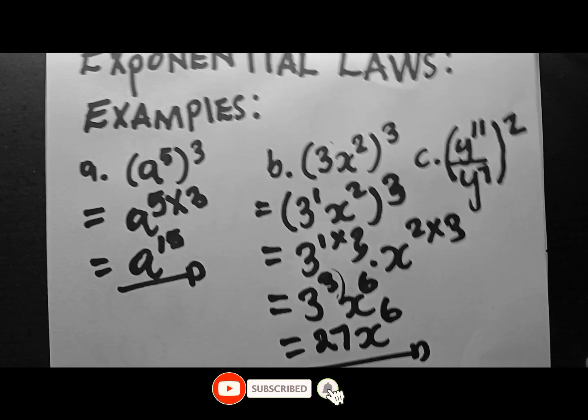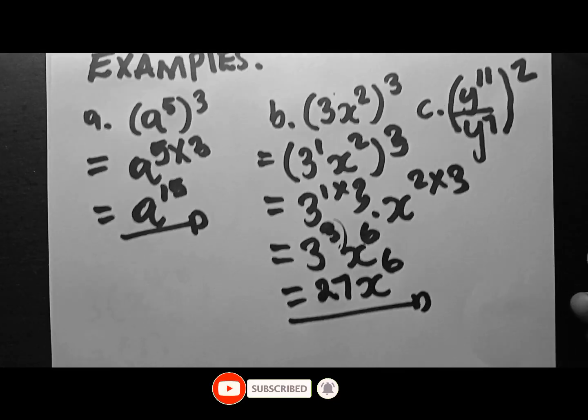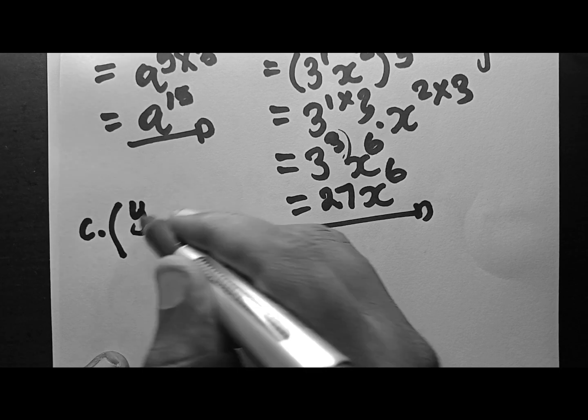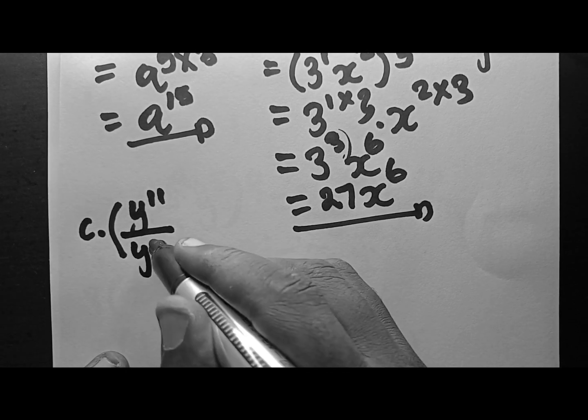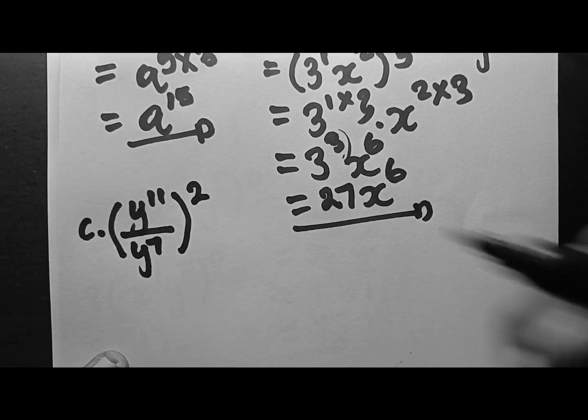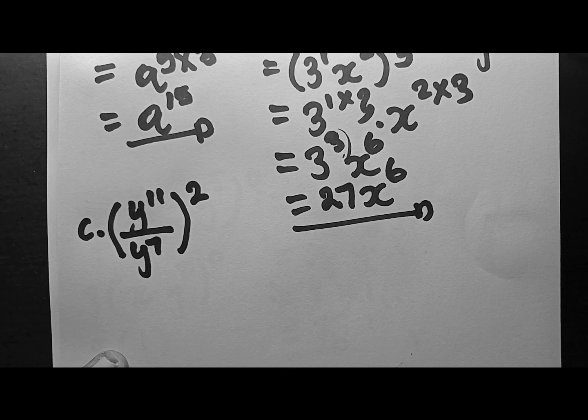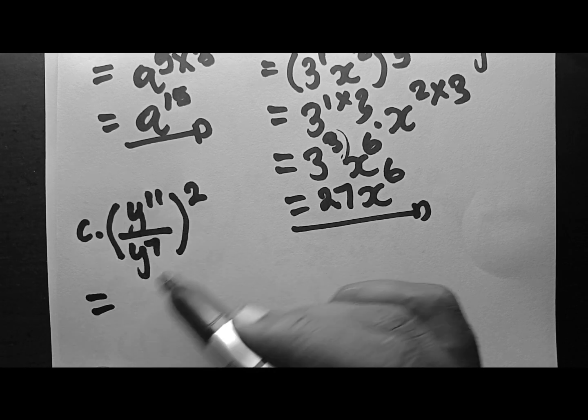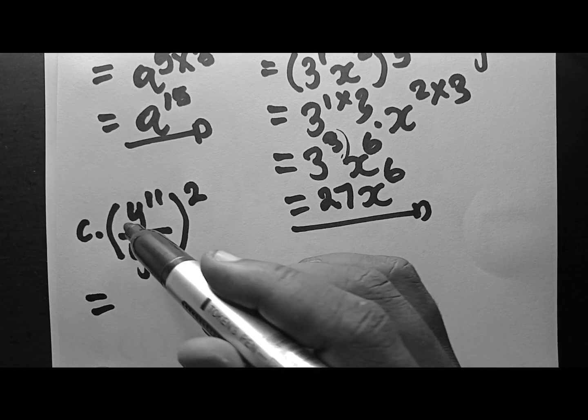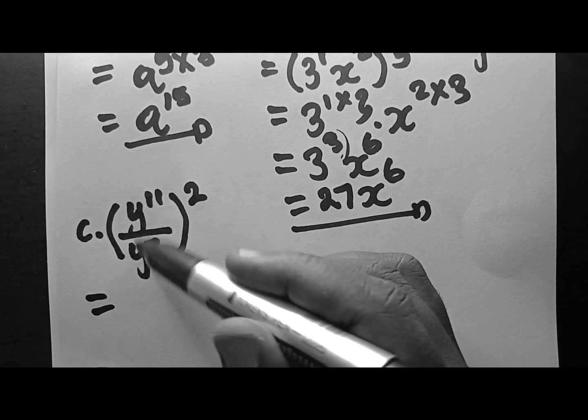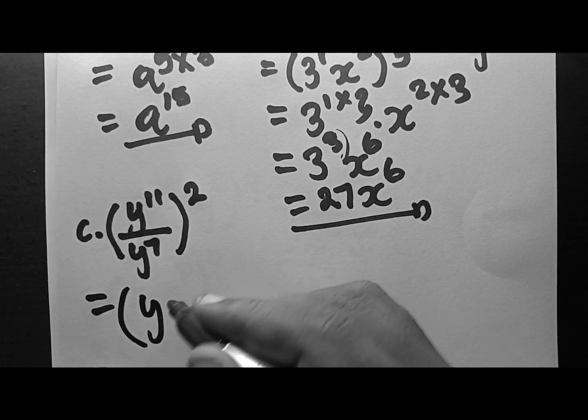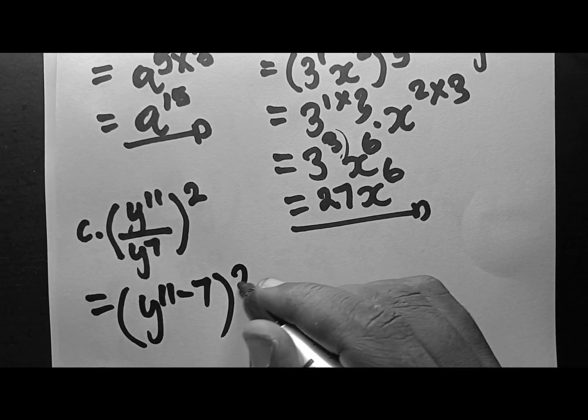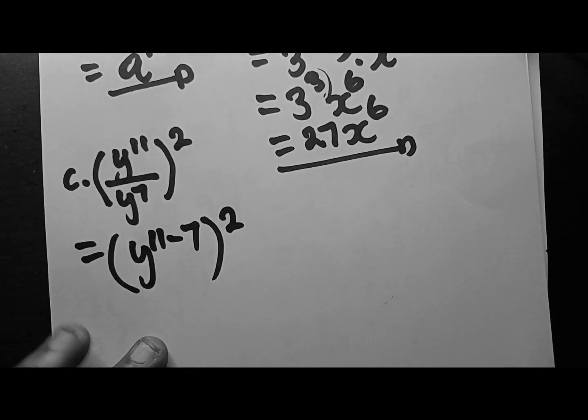Number C is funny. The position for C is very funny. Let's do C here. So we have C bracket, y to the power of 11 over y to the power of 7, and they are all to the power of 2 outside there. Here I suggest you deal with what is inside the bracket first. Don't rush.